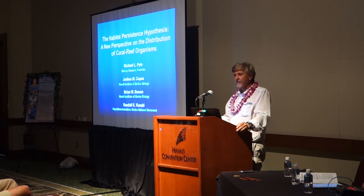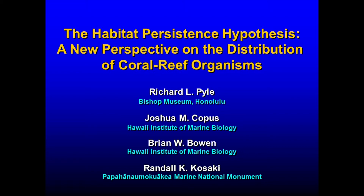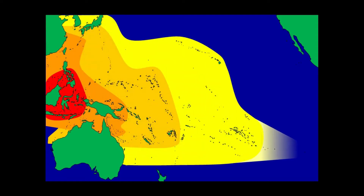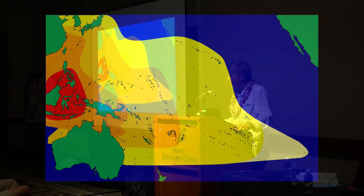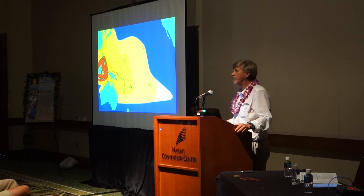Let me tell you a little bit about the habitat persistence hypothesis, a new perspective on the distribution of coral reef organisms. Most of you are familiar with the general pattern of attenuating diversity — you have the highest rates of diversity in the western Pacific and fewer species as you move eastward across the Pacific. The coral triangle seems to be this hot spot, and there are several hypotheses that try to explain what causes this pattern.